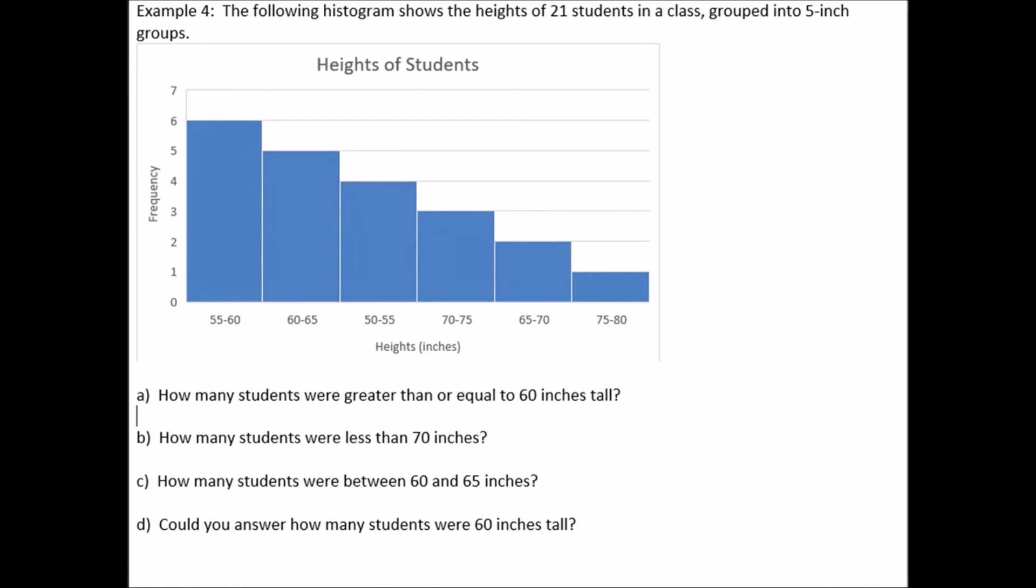Okay. Final question. The following histogram shows the height of 21 students in the class grouped into five inch groups. Okay. When it says five inch groups, we know that the intervals are here. This one, so this one consists of the numbers 55, 56, 57, 58, and 59.